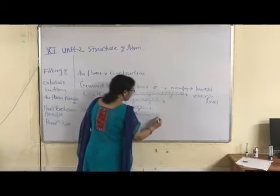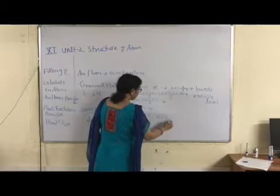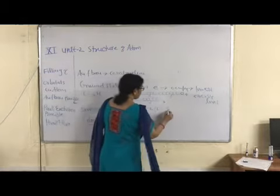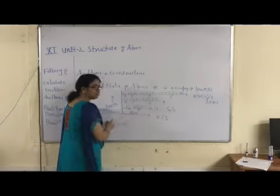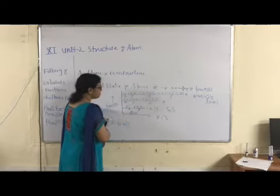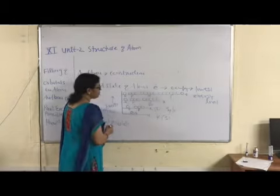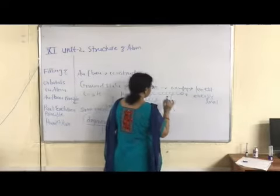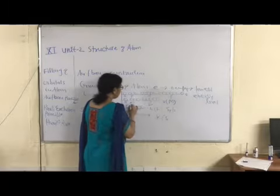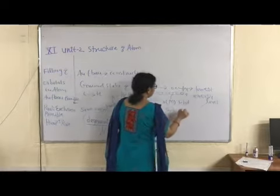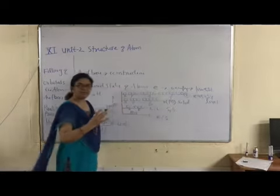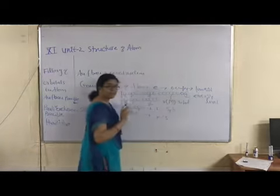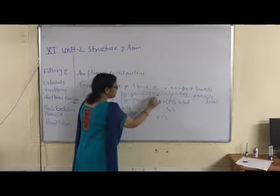The first orbit is the K shell, with subshell S. The second orbit is the L shell, with subshells S and P — P starts from the second energy level. D starts from the third energy level, the M shell, with subshells S, P, and D. The fourth energy level is the N shell, with four subshells: S, P, D, and F.